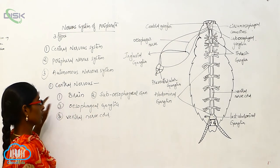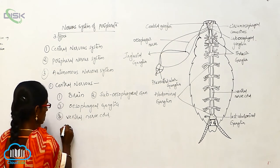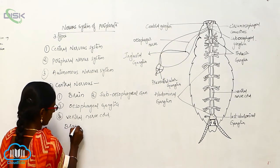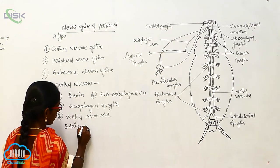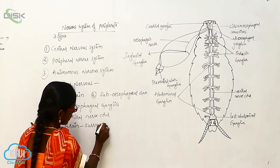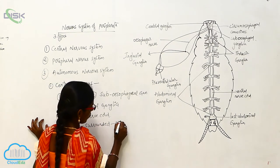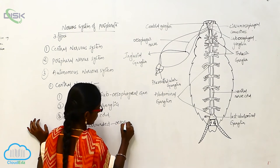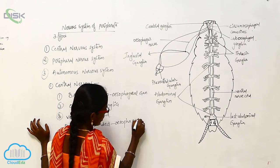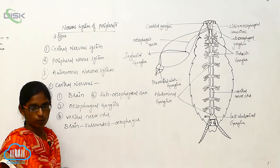The brain is surrounded by the esophagus.